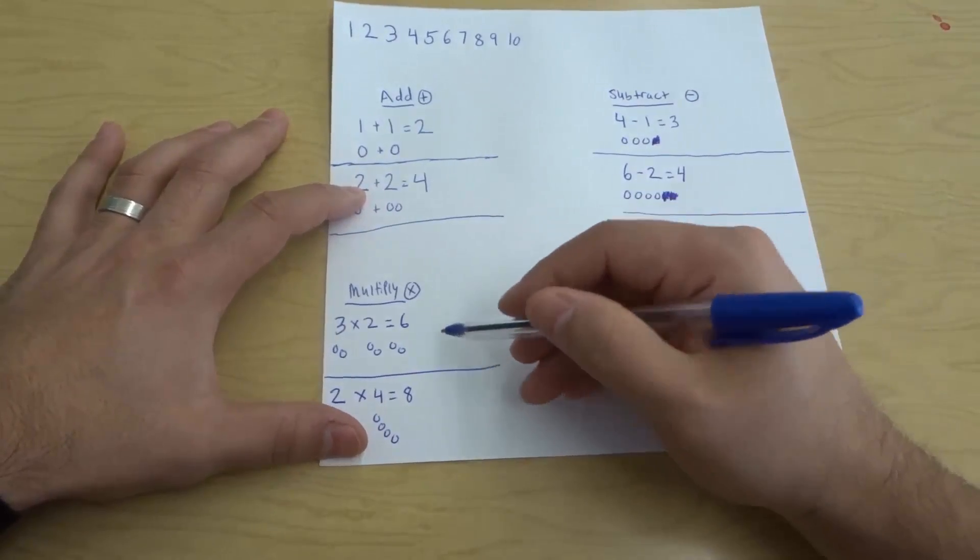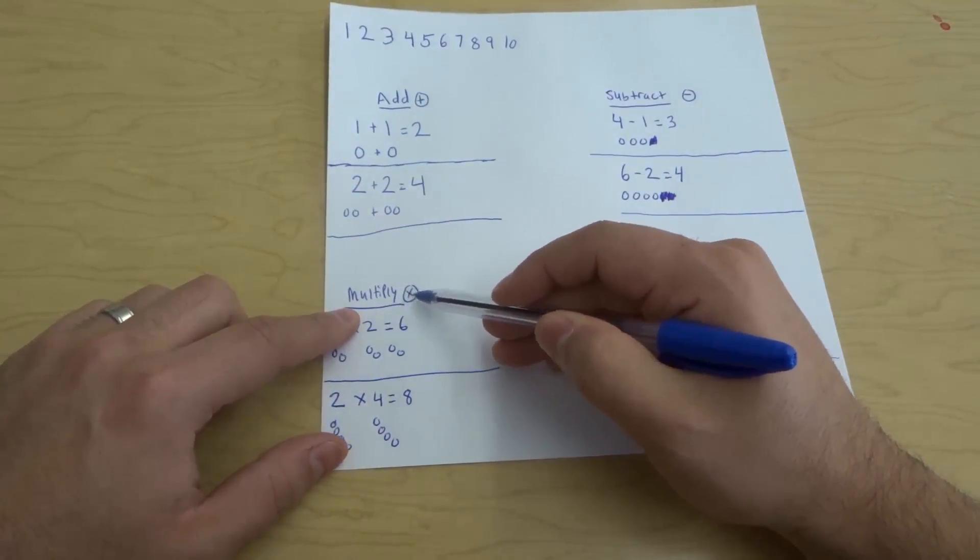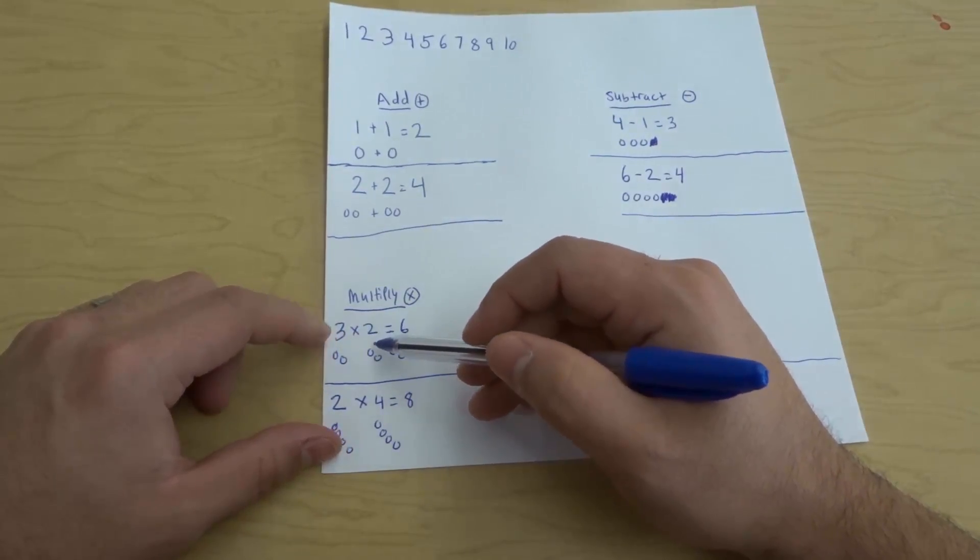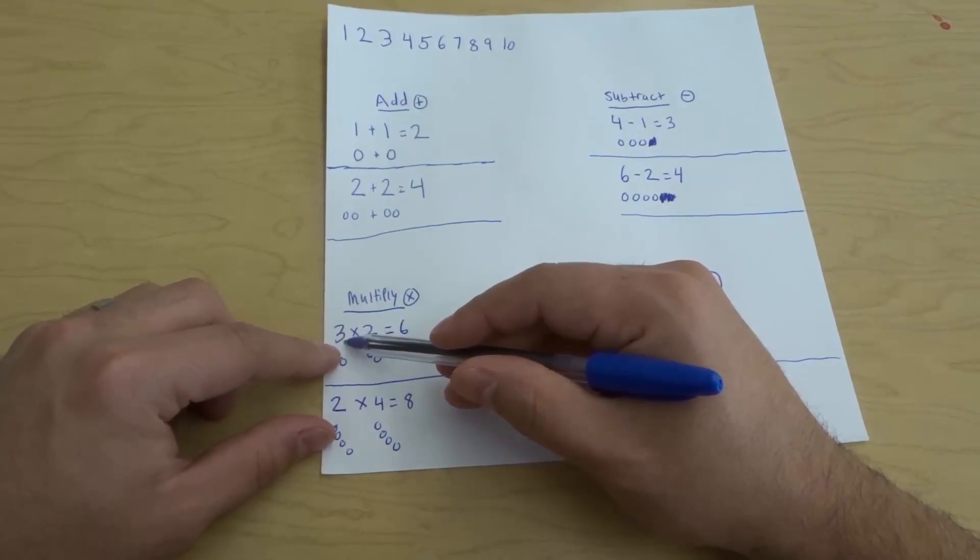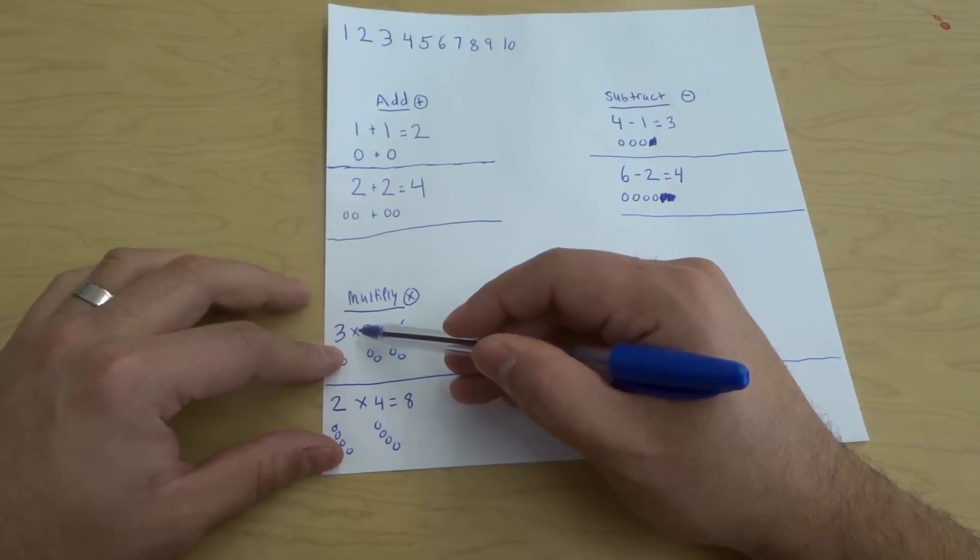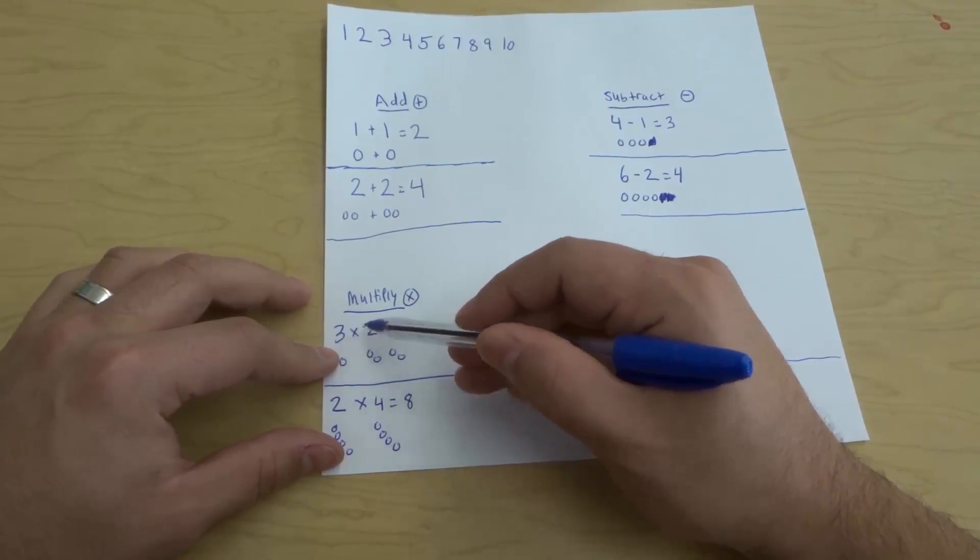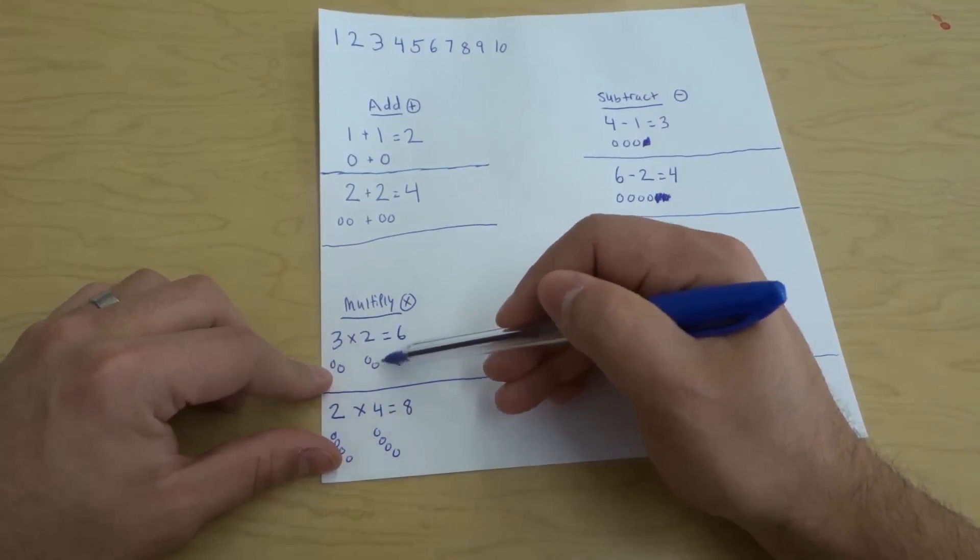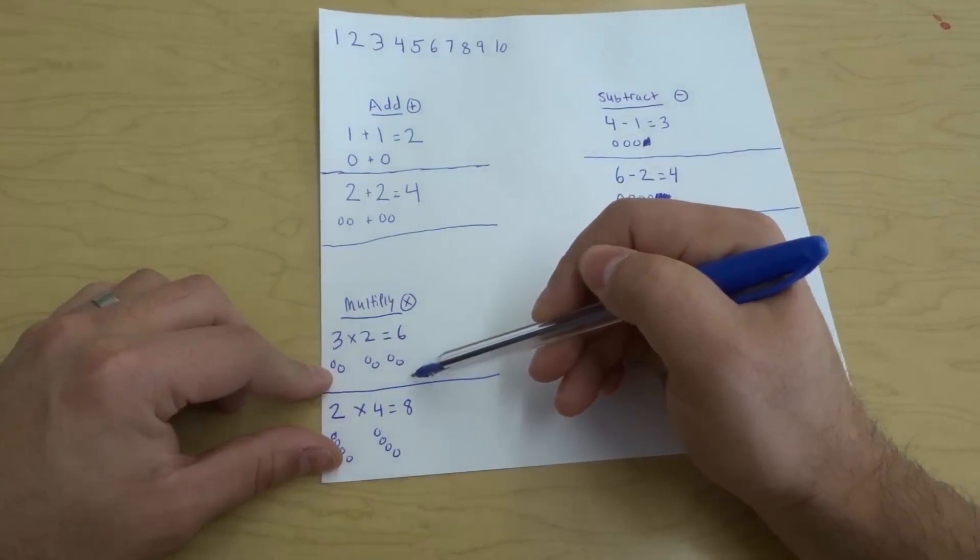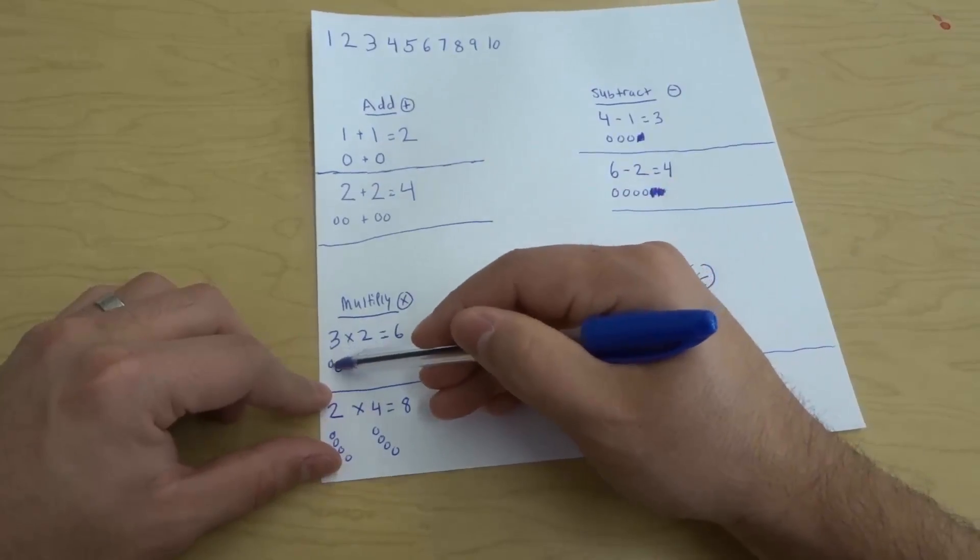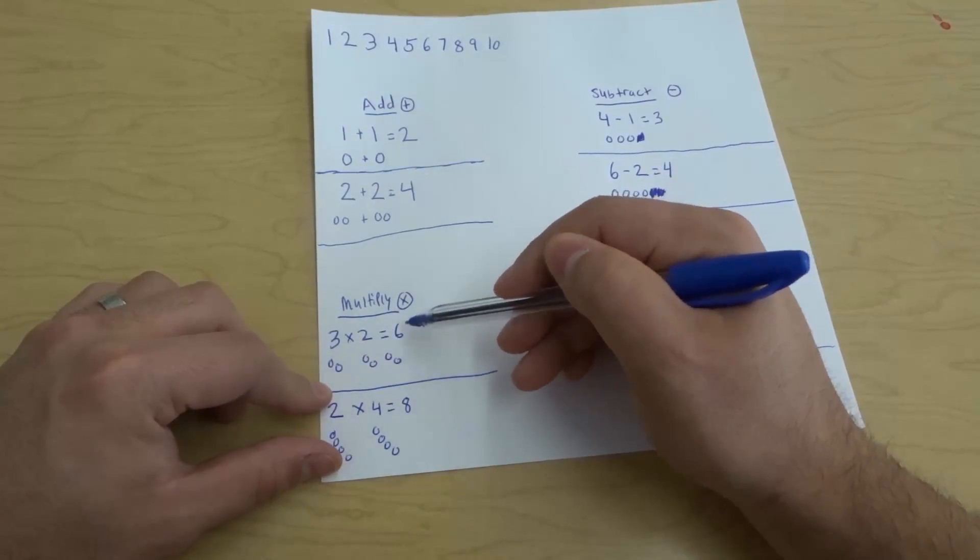The next mathematical skill that I want to go over is multiply. Now this little x symbol right here is a symbol for multiply. When you multiply, you are figuring out a number of groups and how many are in each group. So 3 times 2, and times is another way of saying multiply. That means that we have 3 groups with 2 in each. You can see there's 1, 2, 3 groups and each group has 2 circles in it. So what we do is we draw the groups, 3 groups with 2 in each, and then we just count them: 1, 2, 3, 4, 5, 6. We count them all together and that's our answer. 3 times 2 equals 6.